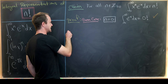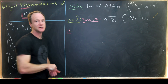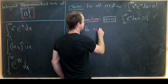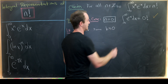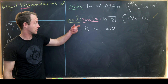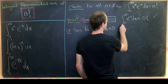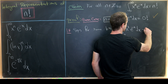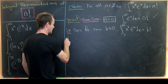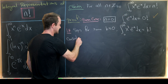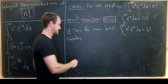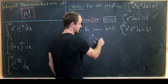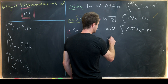Our induction hypothesis: suppose for some value k greater than or equal to zero, our claim holds. In other words, the integral from zero to infinity of x to the k, e to the minus x dx, equals k factorial. Then our next step is to consider the k plus one case, which is the integral from zero to infinity of x to the k plus one, e to the minus x dx.